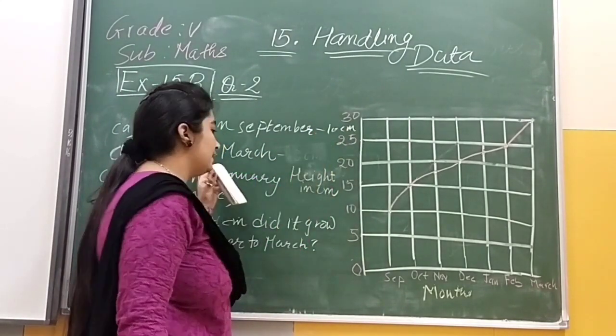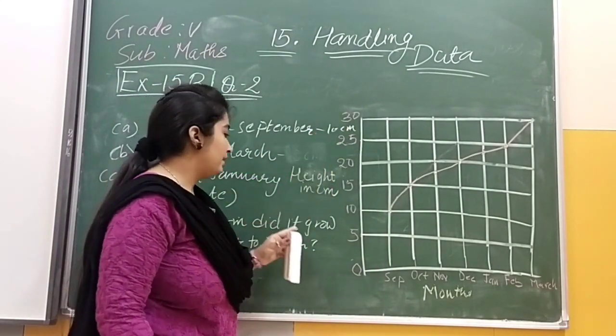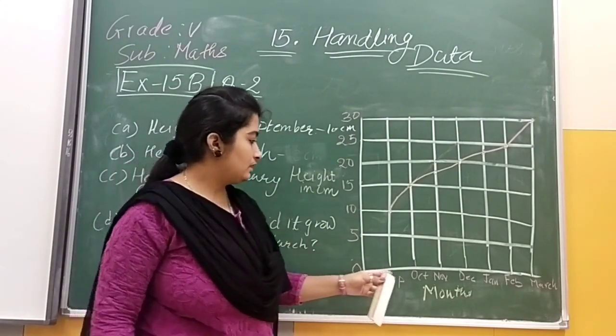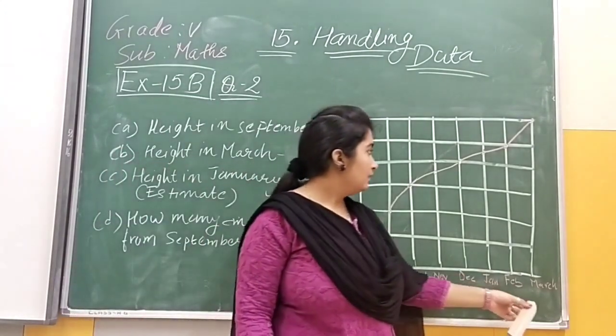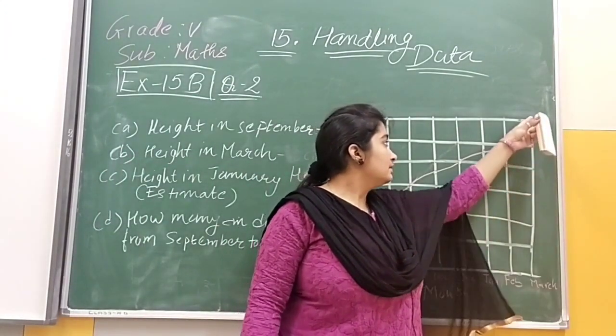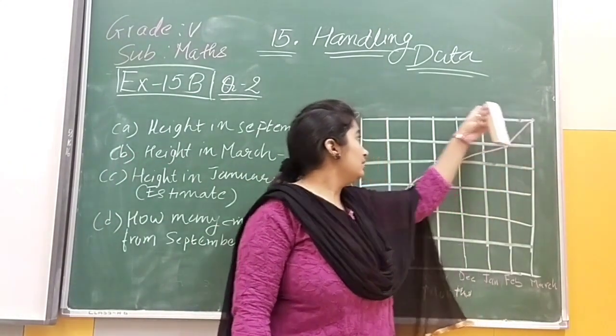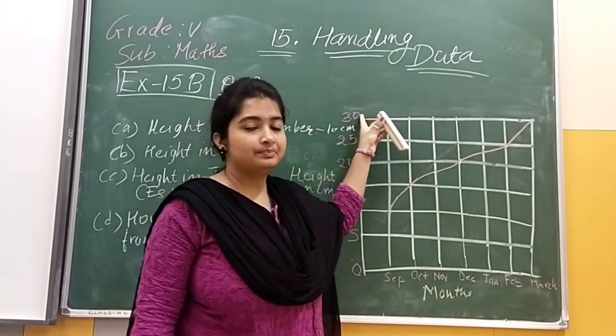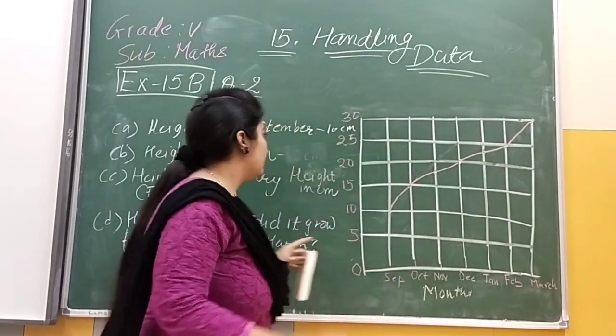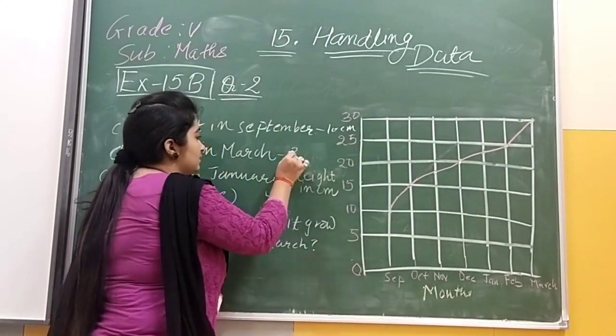Then height in March. March mein kitni ho gayi thi uski height? Yahan pe dikh raha hai — 30. That will be 30 centimeter.